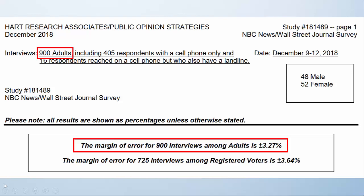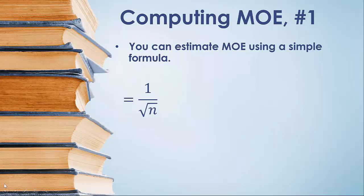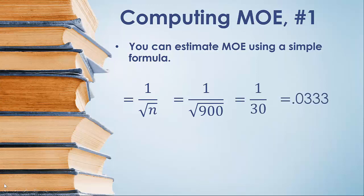I'm going to show you two ways to do it. The first way for computing the margin of error is an estimate, but it's based on a really simple formula. All you need to know is that sample size. In our formula, the sample size is n — n just stands for the number of people that you measured. When we take 1 and divide by the square root of the sample size, we end up with 0.0333 repeating, which, if we move that decimal place two places to the right, we find that that's 3.33%.